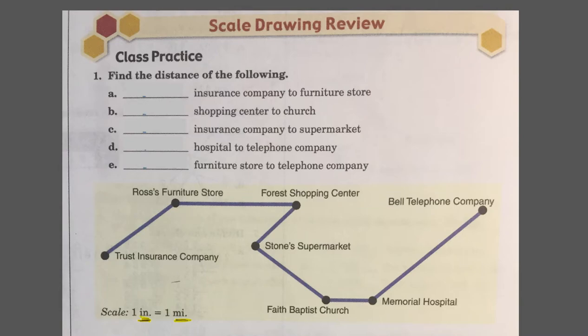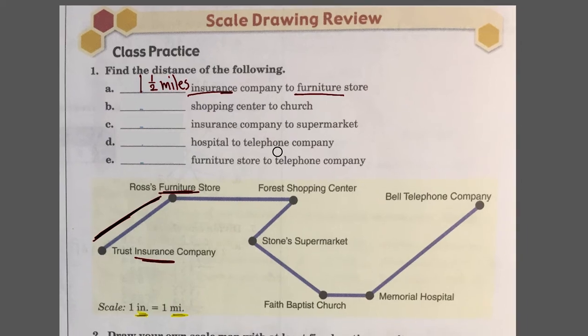Let's do one of these problems. The first one is insurance company to the furniture store. You're measuring this distance here. If you took your ruler and measured it, you would get one and a half inches. The distance between the insurance company and the furniture store is one and a half miles. Make sure you write miles as your units of measure, not inches. I would recommend that you write down the measurements on each side, especially for the next question.